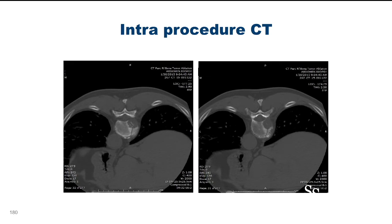Looking at the CT, you can see the entire vertebral body is essentially normal, with the tumor really confined to the posterior right aspect of the vertebral body, but there is a cleft going through. I felt that cleft was what was giving the patient his motion-related pain, and the tumor definitely needed to be treated.